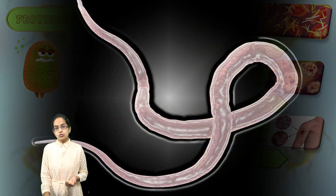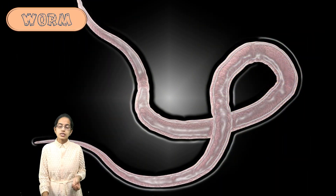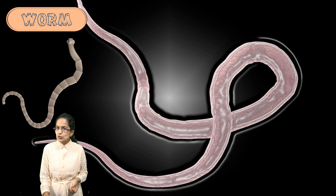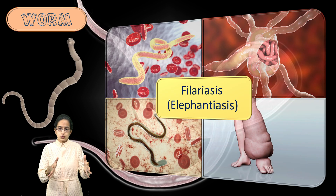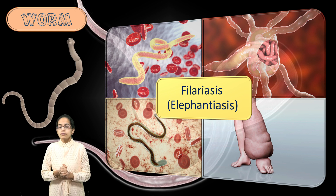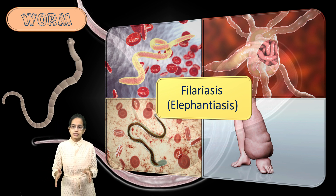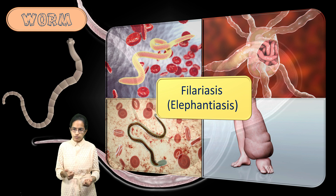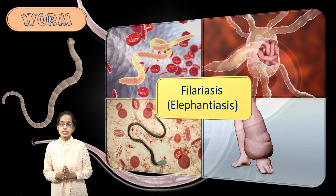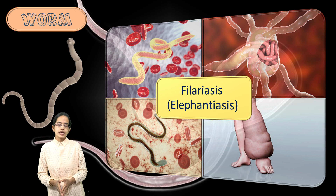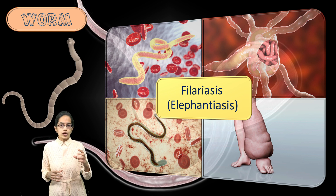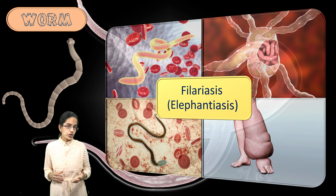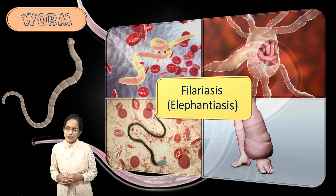Finally, when it comes to worms, the most commonly heard disease is elephantiasis, also known as filariasis. Here, one of the legs swells extremely, as you can see in the picture. This is the most common example of a disease caused by worms. This was a fundamental classification of the various diseases caused by various microorganisms. We will be covering such short classes on small topics very important for your exam. Stay tuned and have a wonderful day ahead.